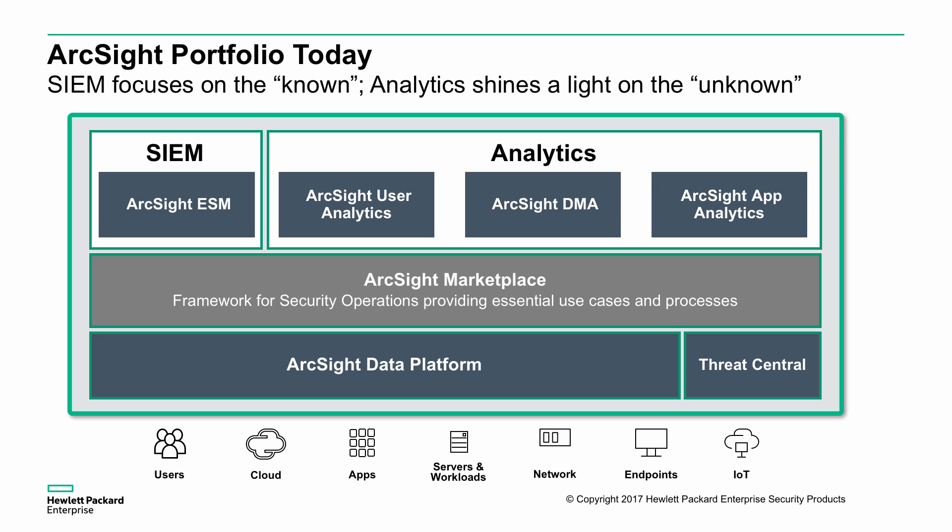UBA sits at the top end of the stack. What we need to do is collect log data from the underlying systems, applications, and devices. We use the ArcSight Data Platform to do that collection and distribution. The UBA solution then receives that data and performs security monitoring based on rules, processes, anomaly detections, and analytics.